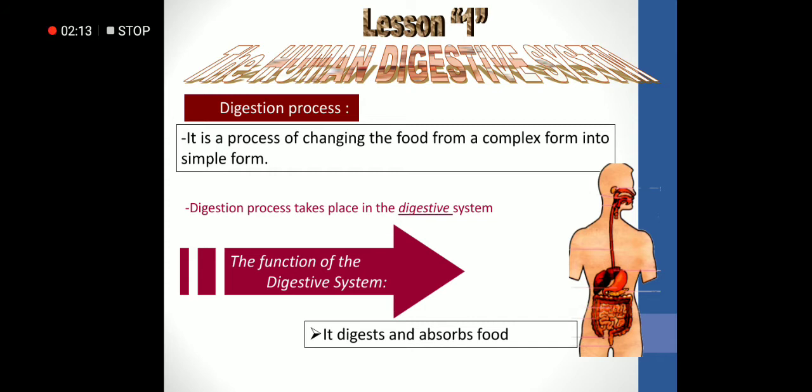First, what does digestion mean? The digestion process is the process of changing food from a complex form into a simple form. Digestion takes place in the digestive system. The function of the digestive system, as we said, is to digest and absorb food.